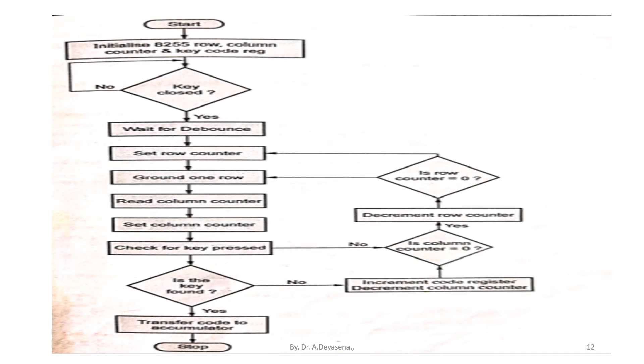Keyboard interfacing flowchart is represented here. First, we are initializing 8255 row, column, counter and key code register. We have to check whether key is closed. If it is yes, then we have to wait for key debounce.